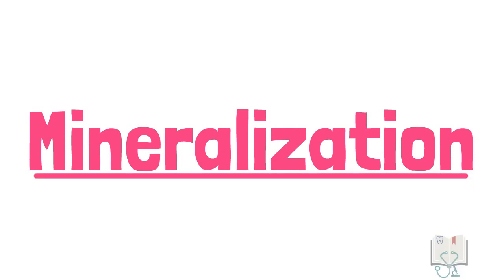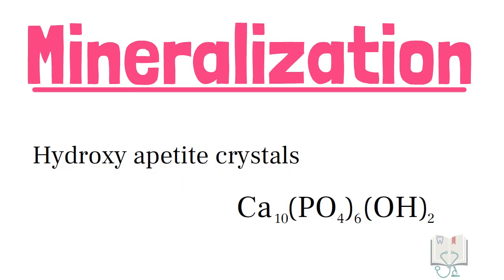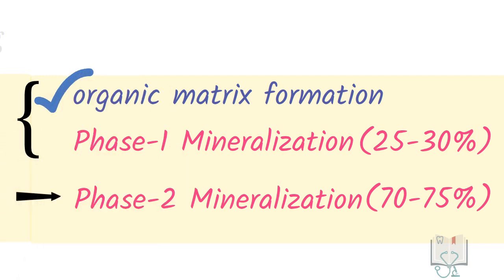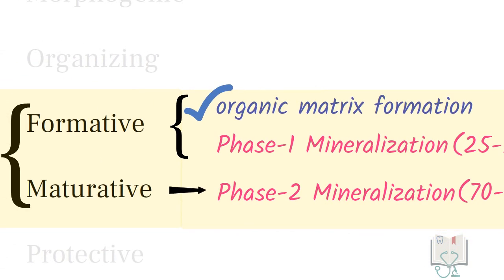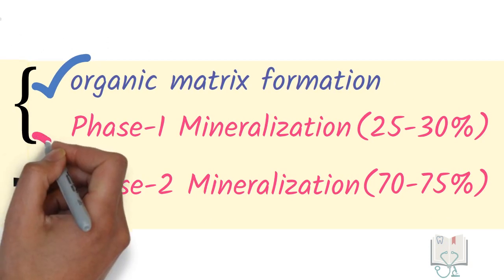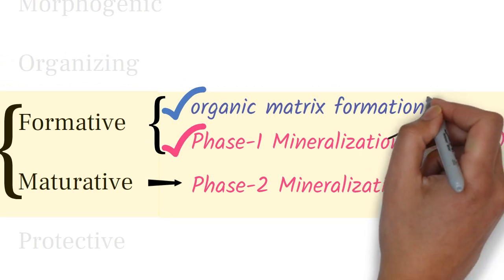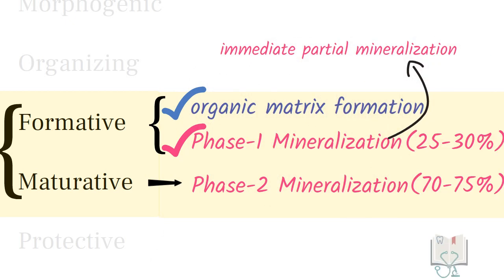The main inorganic portion of enamel is formed by hydroxyapatite crystals. The complete organic matter formation occurs in just one phase during the formative stage. However, mineralization occurs in two phases: about 25 to 30 percent during the formative stage along with the organic matrix formation — also referred to as immediate partial mineralization — and the rest 70 to 75 percent during the maturative stage.